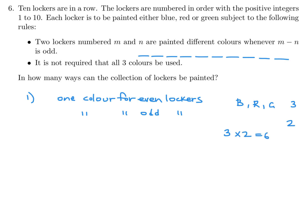For example, the first locker is odd — let's say it's blue. The even lockers — the second, fourth, sixth, eighth, tenth — are also blue. Then another color for the odd lockers, say red. Let's verify: locker 4 minus locker 1 is 3, which is odd, and they are indeed different colors. That's why the odd and even distinction matters, because of this rule. Not all three colors were required to be used, and that's also held up.